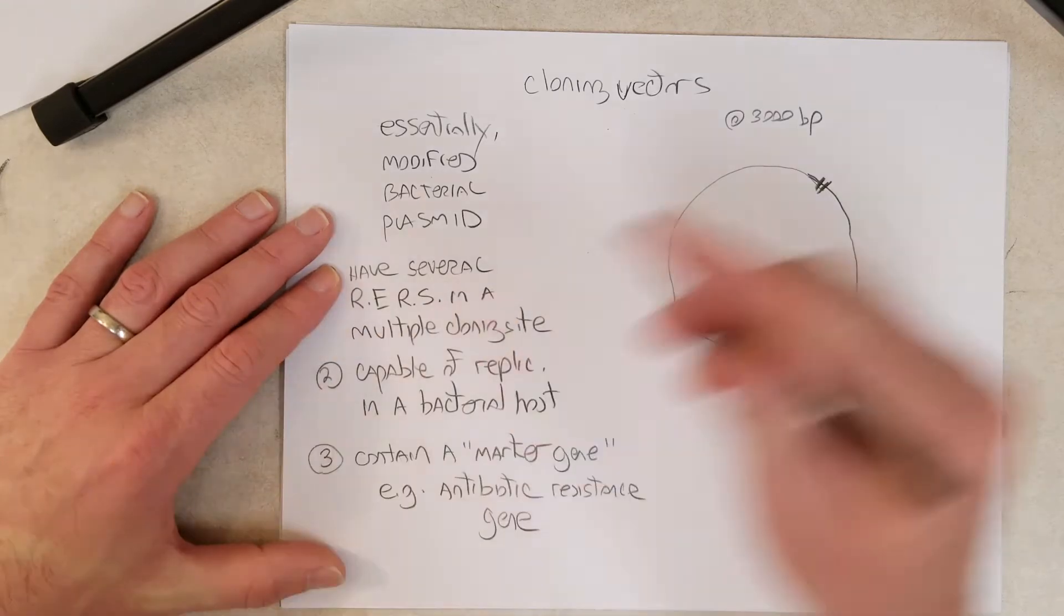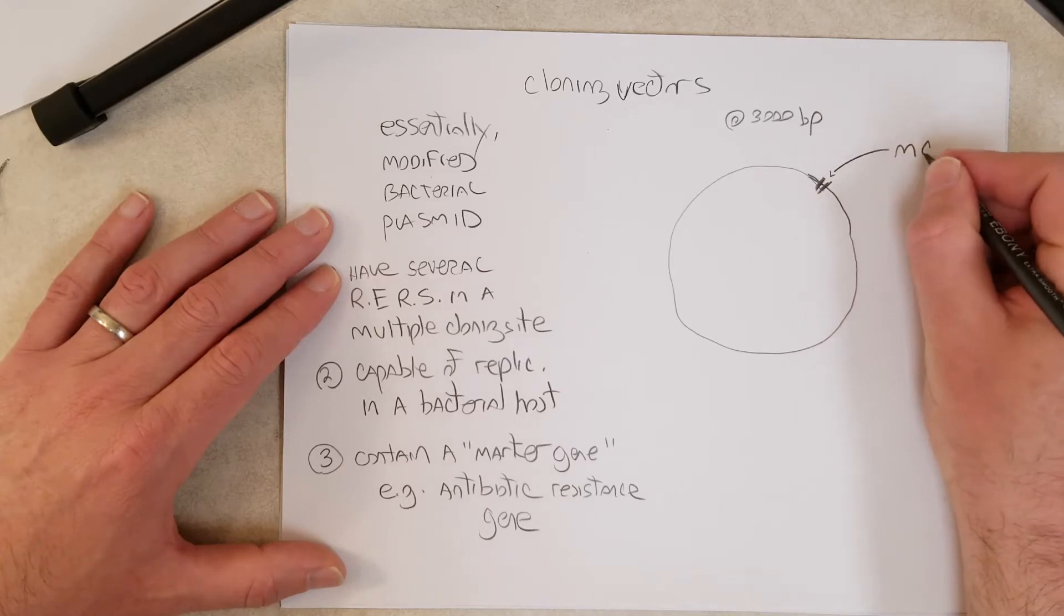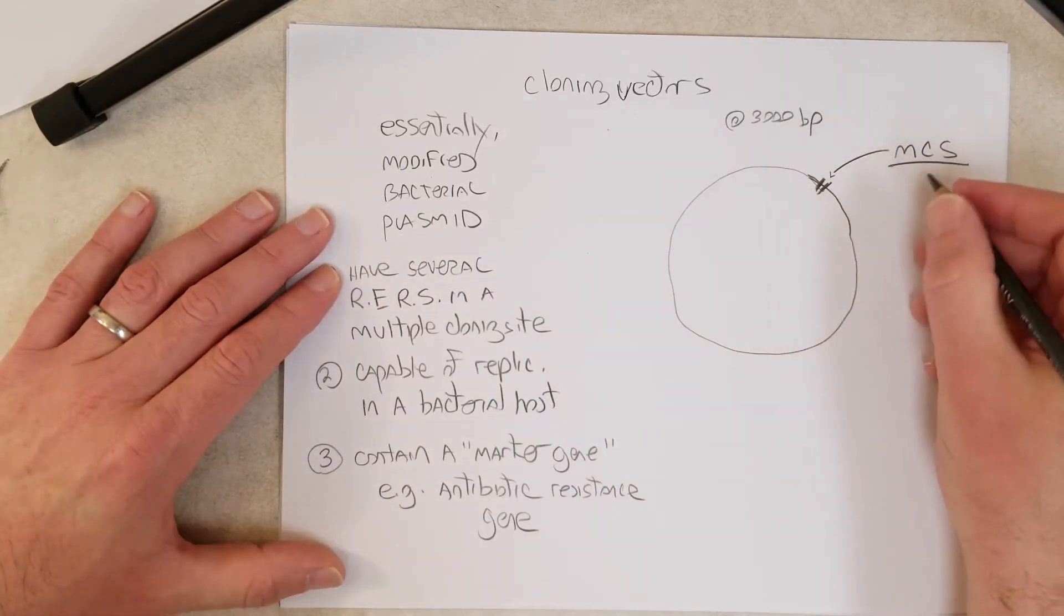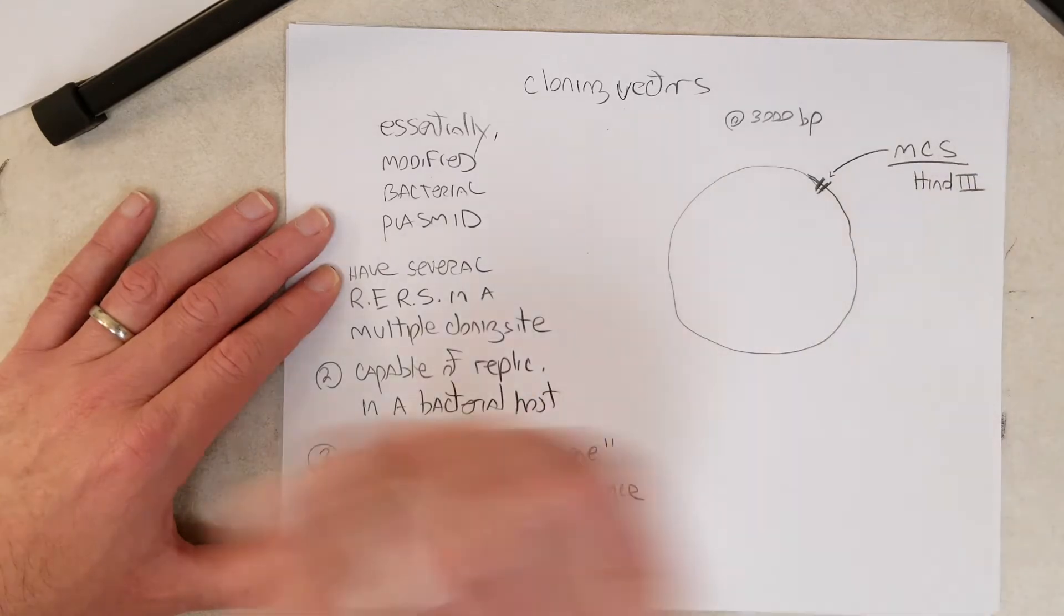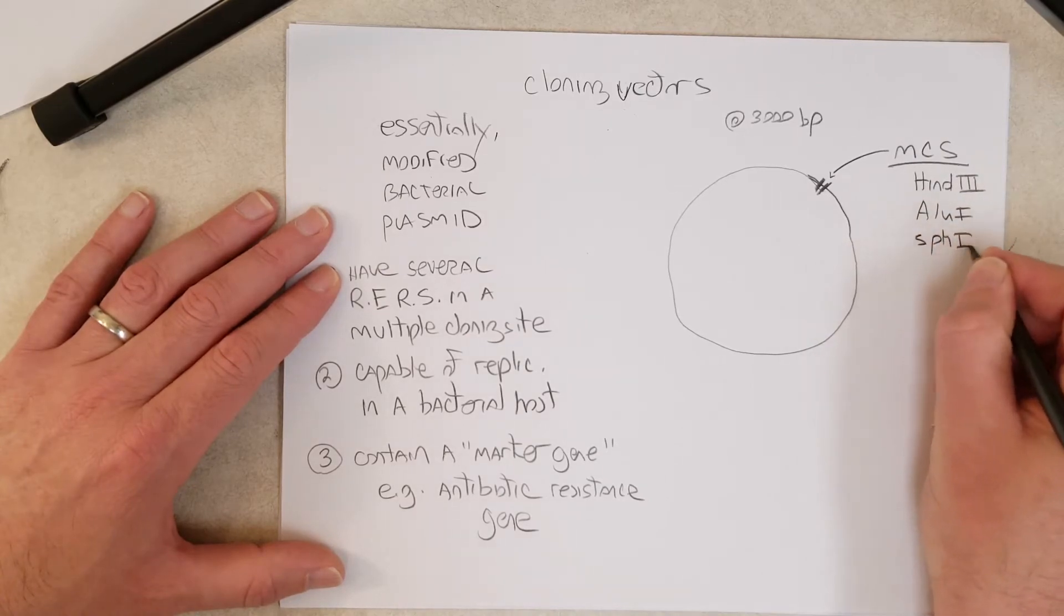This would be the location of the multiple cloning site, and the multiple cloning site has sites for lots of common restriction enzymes that are found in most molecular genetics laboratories, like HINDI-3, or ALU-1, or SPH-1,